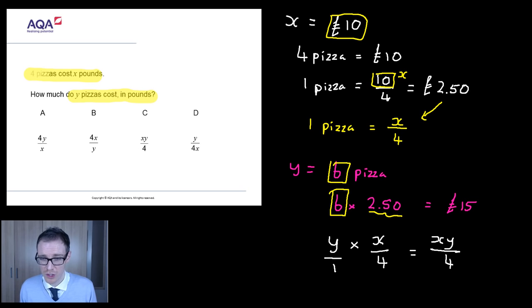Or some people will just say if you've got y lots of x over four, then that's just the same as y times x over four, which we write as this. Either way you do it, hopefully you're happy that that's the final answer. Have a check, is that one of them? Yay, there it is there. So that is going to be option C.